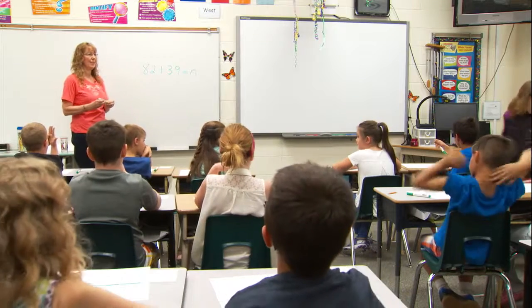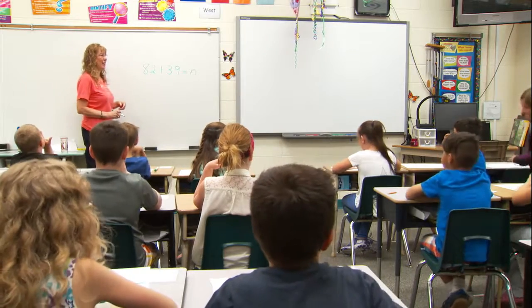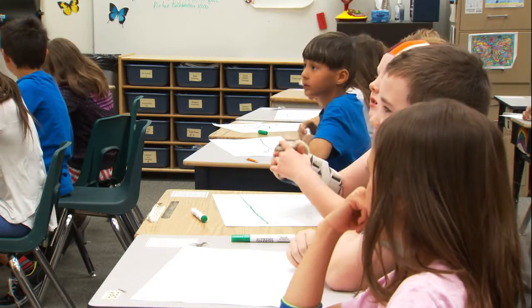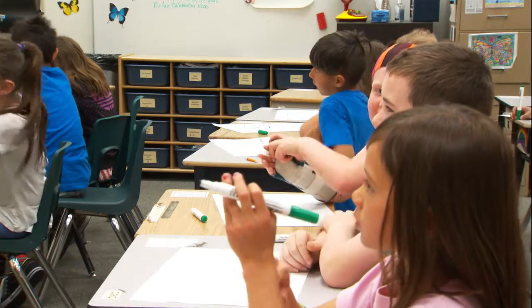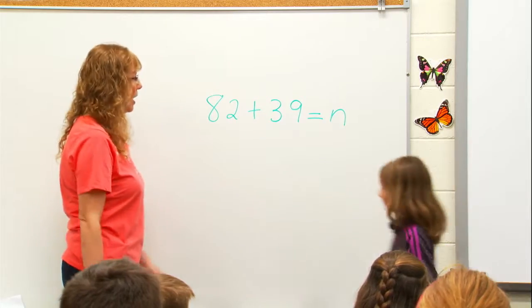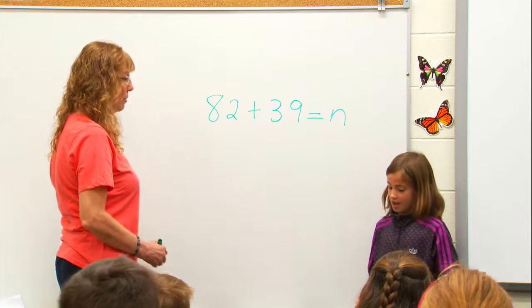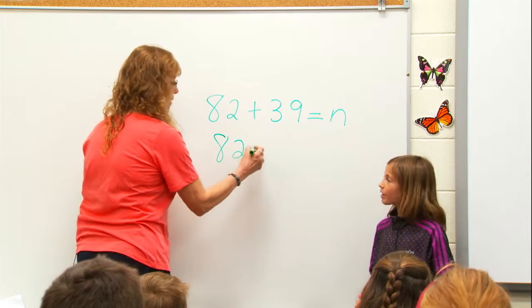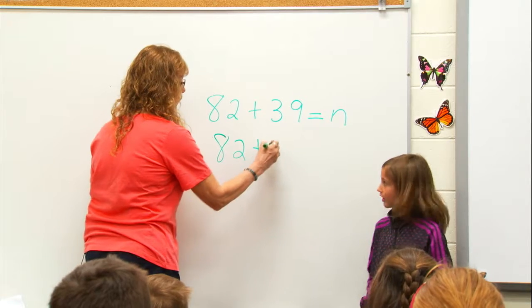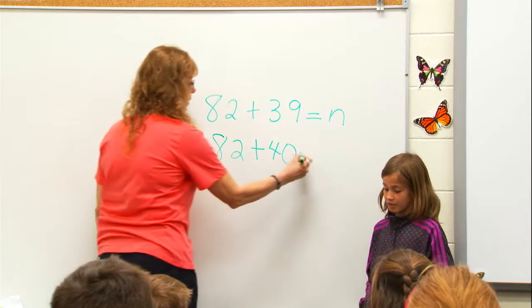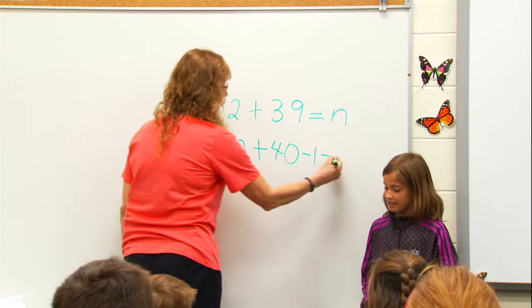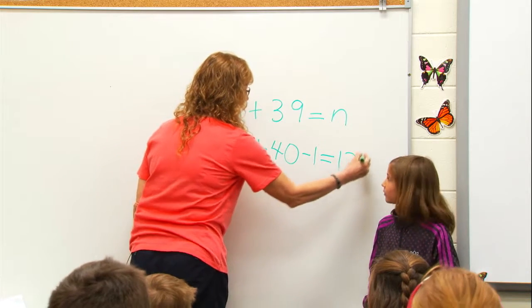Another strategy students can use is compensation. Students can add to or subtract from a number to make it a friendlier number, which is easier to work with, and then compensate at the end to keep the total correct. I started at 82, added 40, minus 1, and landed at 121. They know 39 is close to 40, so they add 40 and then take away 1 to get 39, which is actually a hard number to add, but with compensating, it's very easy.